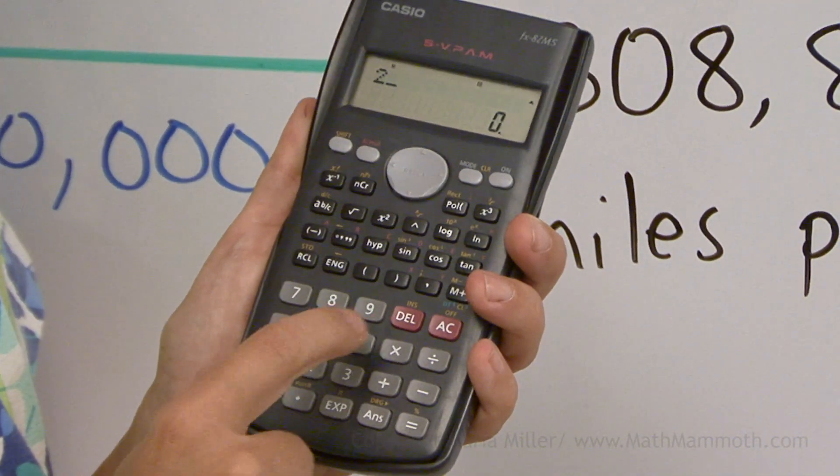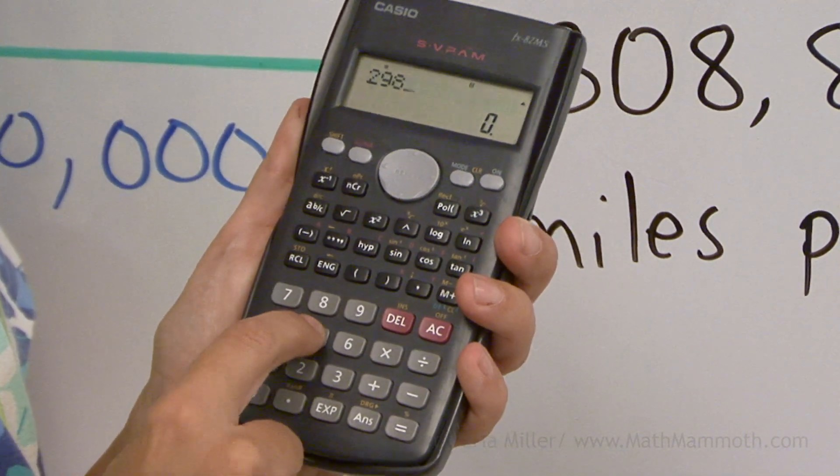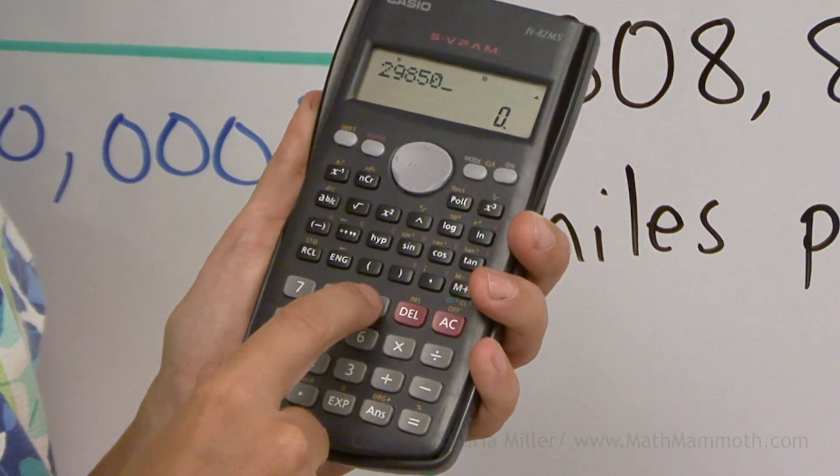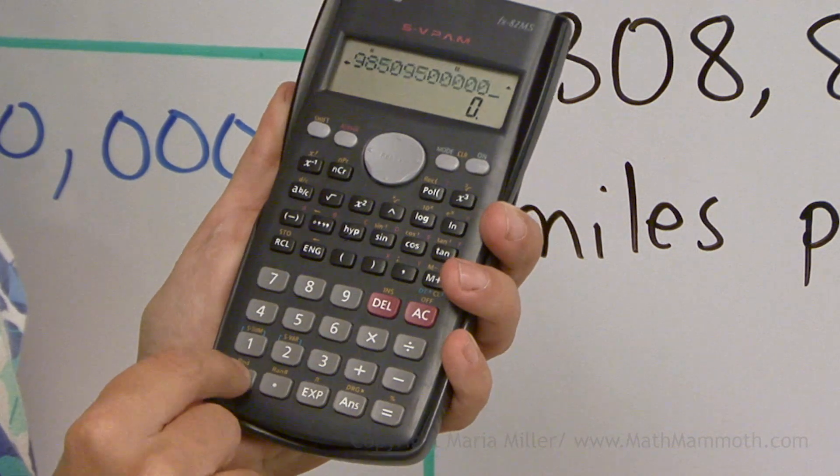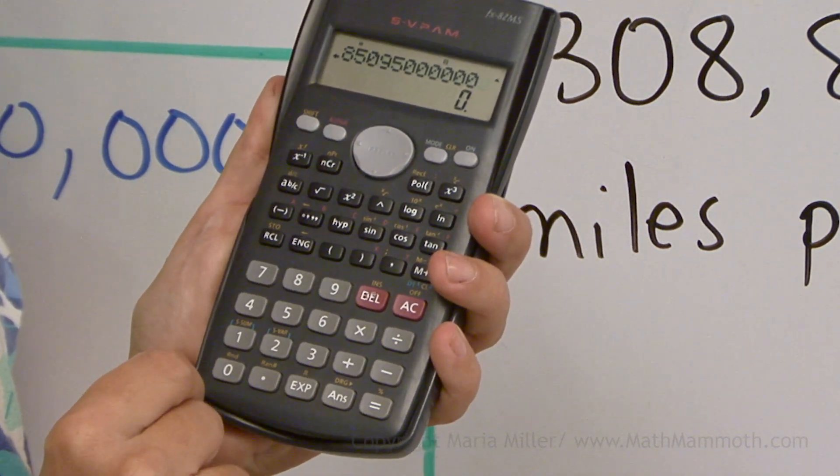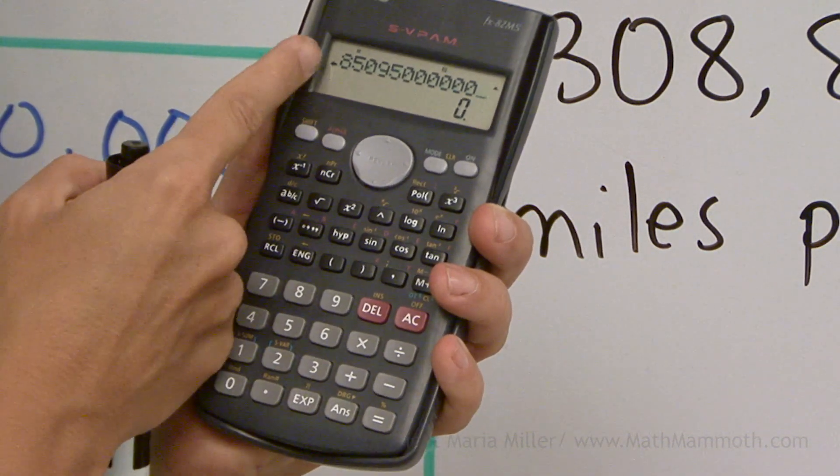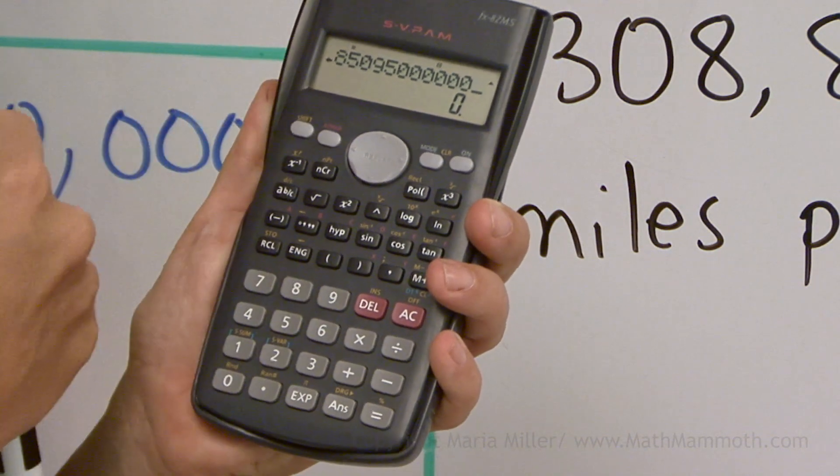I have 2, 9, 8, 5, 0, 9, 5, and then 6 zeros: 1, 2, 3, 4, 5, 6. It doesn't even quite fit. It has to push some of the digits off this end of the display.